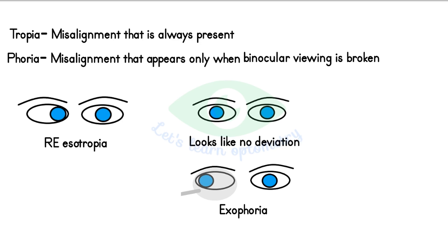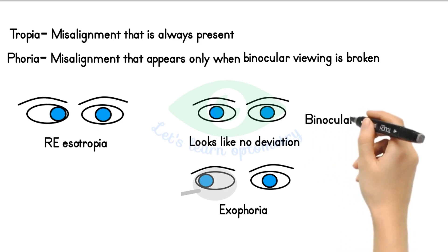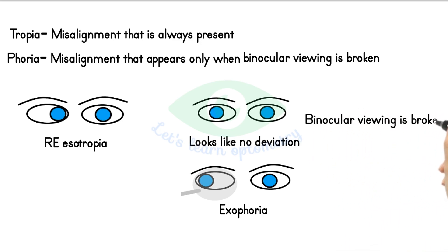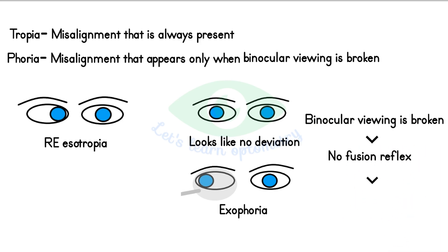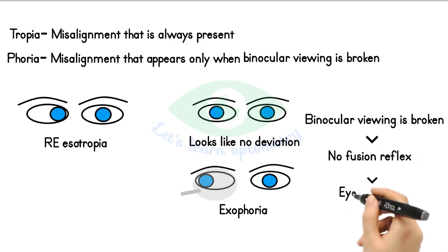There are some rare exceptions to this rule, such as in patients with anisometropia, where the greater accommodative convergence of one eye influences the movement. So in summary, in phoria, when the binocular viewing is broken there is no fusion reflex and the eye deviates to a heterophoric position.